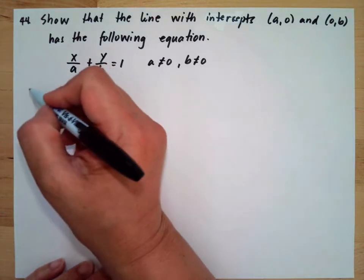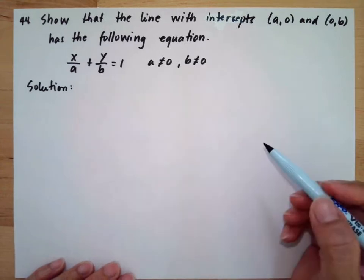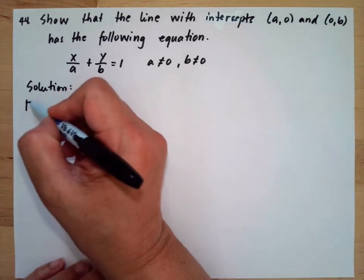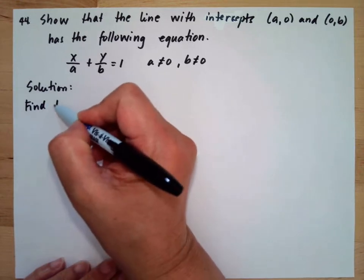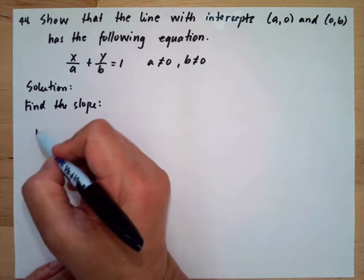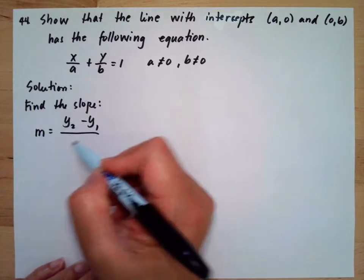Let's solve this problem. We will begin by finding the slope. To find the slope, we will use the slope formula: m = (y₂ - y₁)/(x₂ - x₁).